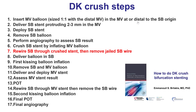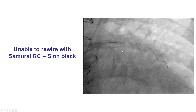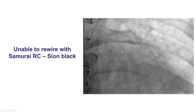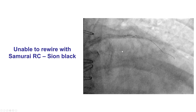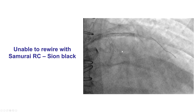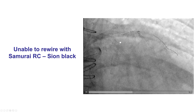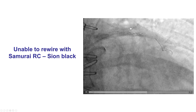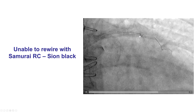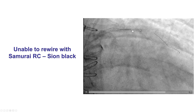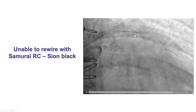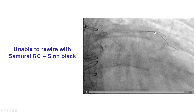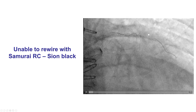The next step was to rewire the side branch and remove the jailed side branch wire, and this step ended up being challenging. A workhorse wire did not succeed in entering the diagonal branch. The way around this is to use a polymer-jacketed wire such as the Xeon Black, which was used in this case, or sometimes use a microcatheter — either a regular or dual-lumen one — that can also help prevent the wire from getting under the stent struts.